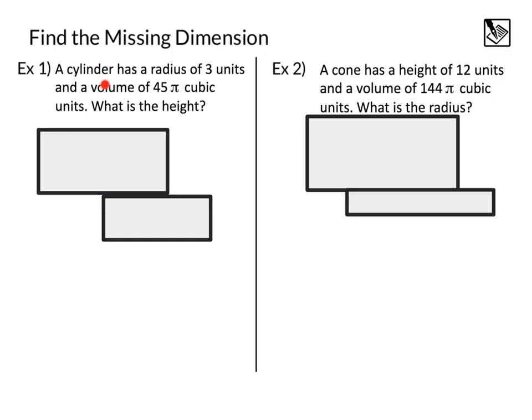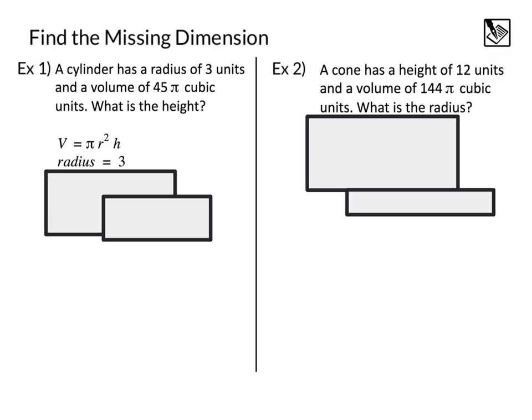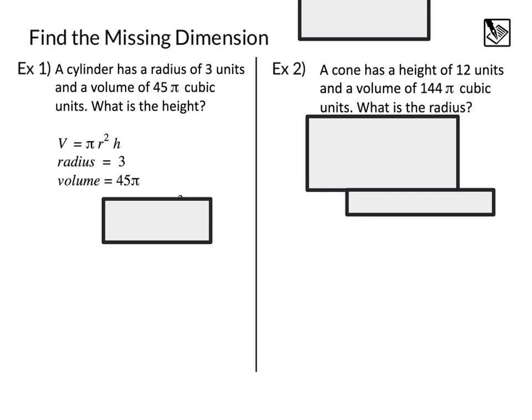For this first one, we know a cylinder has a radius of 3 and a volume of 45 pi cubic units. We know our cylinder has a formula of pi r squared h, the radius is 3, and the volume is 45 pi. Setting up our formula, we know our volume is 45 pi. That gives us 45 pi equals pi r squared h. We know the radius is 3, so we substitute that in, and then we can work this equation out to solve for h.